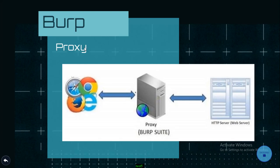First, we have a proxy. If you have a client machine — a desktop with a browser — and there is a server, that is a client-server architecture. The client has a remote system with a web application, for example Facebook.com or Google.com. You can access a URL or IP address and enter it in the browser to fetch the page directly from the server. In this case, we introduce a proxy — that is, the Burp Proxy.